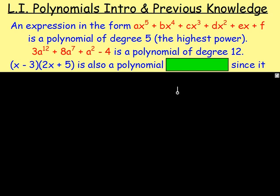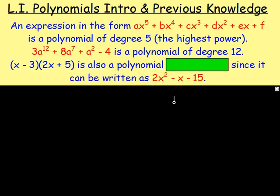Also that is going to be a polynomial. Why would that be a polynomial? Yes you're right because you could multiply it out. And if you multiply it out you end up with 2x squared minus x minus 15. So really that's a polynomial of degree 2.